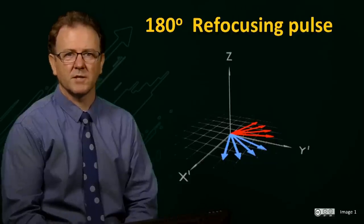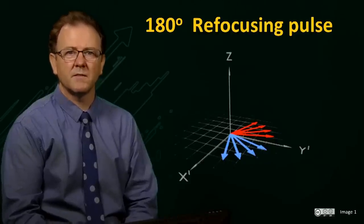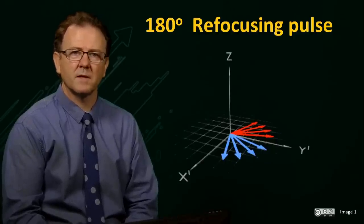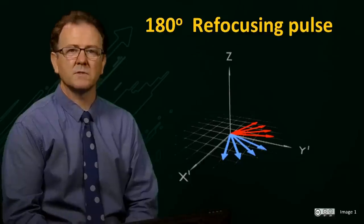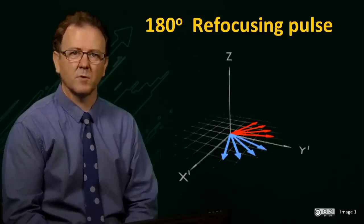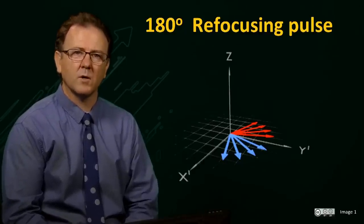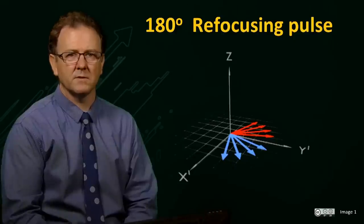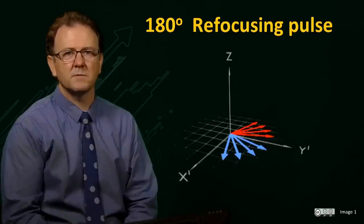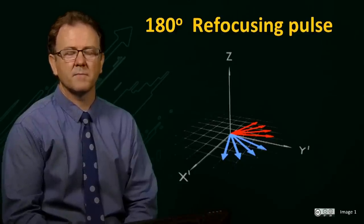The spin vectors associated with different Larmor frequencies then begin to dephase. In our rotating frame of reference, the blue spins, precessing faster than the Larmor frequency, rotate clockwise about B0 and the red slower spins precess anti-clockwise.